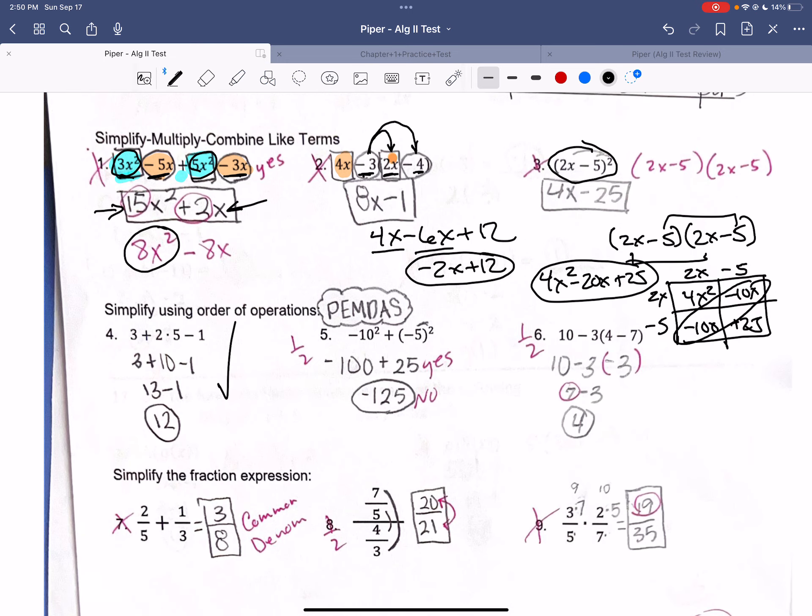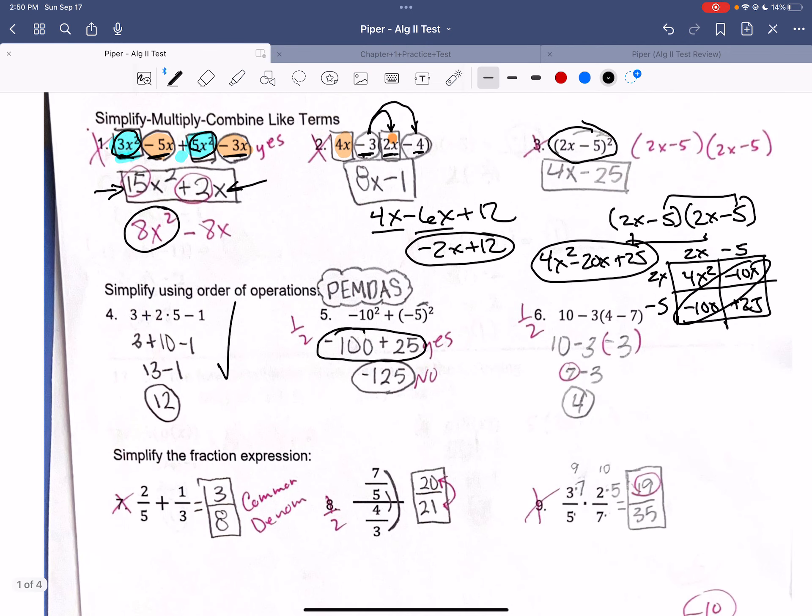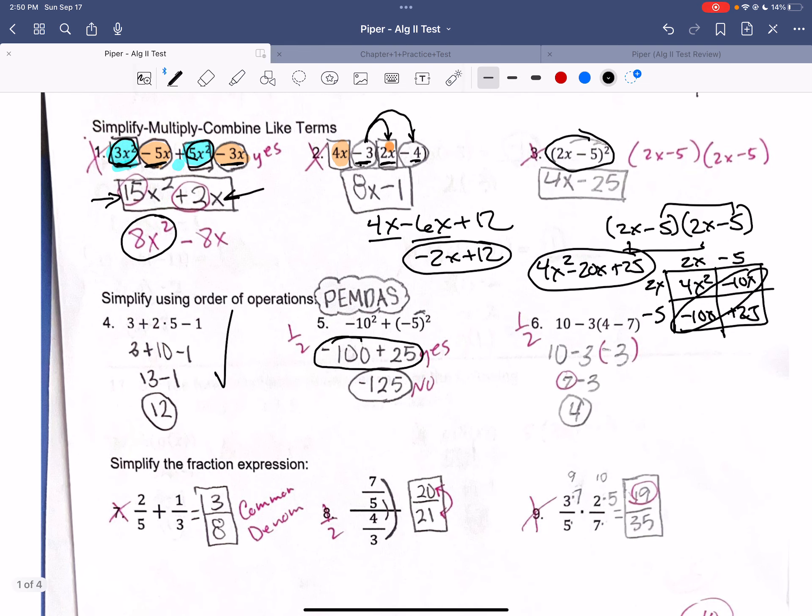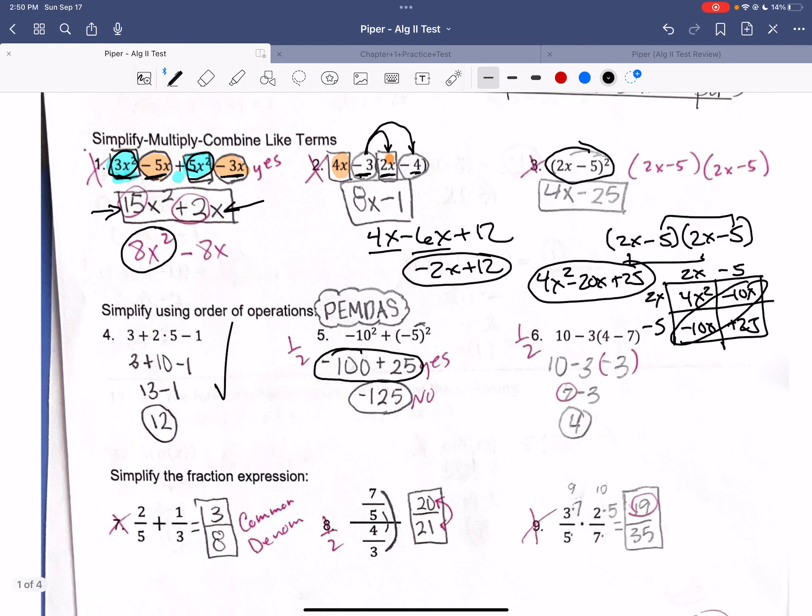Or you can do the box method if that helps you. If you do the box method, it would be 2x minus 5, 2x minus 5. So that's 4x squared. That's going to be -10x, -10x plus 25. And so you're going to add those. So it would be 4x squared - 20x + 25. That's what that is. And you know how to do that. PEMDAS. You did good here. But look right here. -100 + 25. That's -75. You can't add those two together. And I know you have no calculator in here. But you're allowed to use that little simple calculator. So if you're not using a calculator on this, she said you could use the calculator. You can't use your graphing calculator.